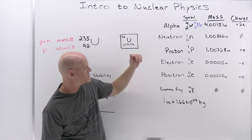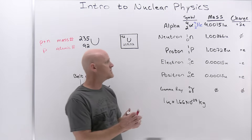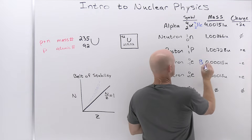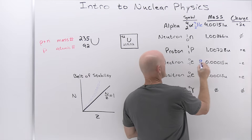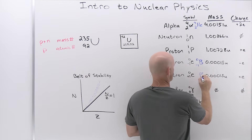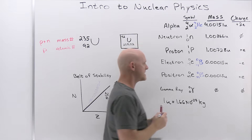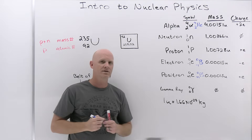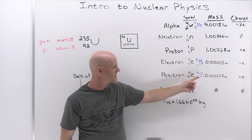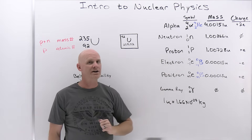One other thing: electrons and positrons are also called beta particles. You might see beta notation used for both, with the distinction being the charge — just like the E notation for electron and positron.